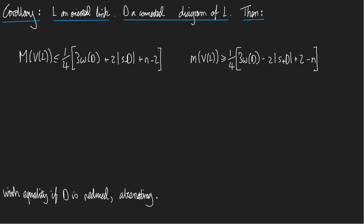Then M of V_L, capital M of V_L, that's the highest power in the Jones polynomial, that's less than or equal to one quarter of this creature: three times the writhe of D, plus two times the number of components in S minus D, plus n minus 2.